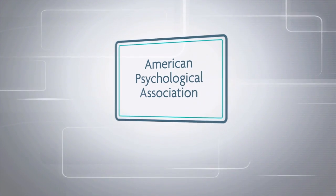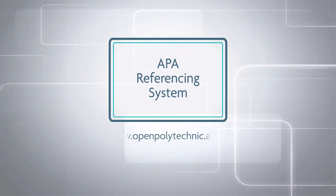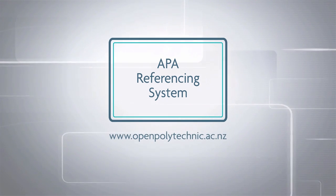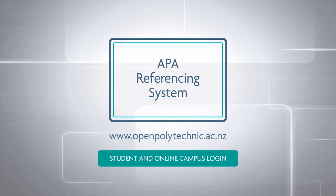Open Polytechnic uses the American Psychological Association, or APA, referencing system, and we have a number of resources available to teach you how to use it correctly. You will find those resources on our website and the support page of the online campus.